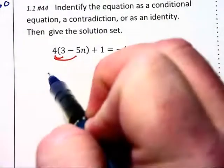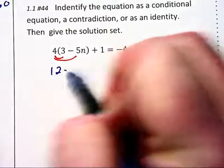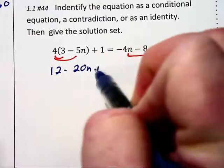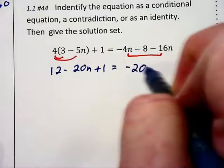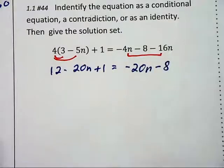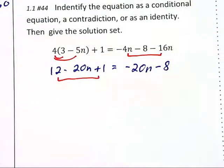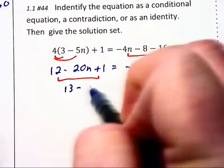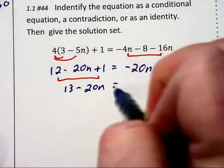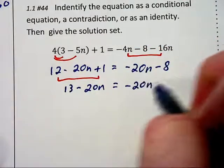The left side of the equation becomes 12 minus 20n plus 1, and the right side is negative 20n minus 8. Let's combine like terms on the left. This is going to give us 13 minus 20n equals negative 20n minus 8. There's no change on the right-hand side.